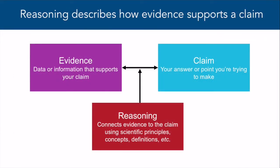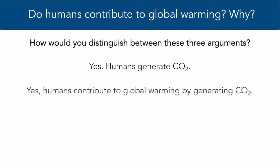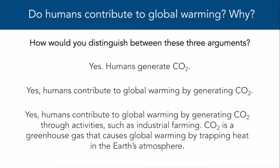When we reason within an argument, we're describing how evidence supports a claim using our knowledge of scientific concepts and principles. But there are many different ways to reason within an argument. For example, how would you distinguish between these three arguments to the question: Do humans contribute to global warming? Why? The first argument: yes, humans generate CO2. The second: yes, humans contribute to global warming by generating CO2. The third: yes, humans contribute to global warming by generating CO2 through activities such as industrial farming. CO2 is a greenhouse gas that causes global warming by trapping heat in the Earth's atmosphere. Though all three statements argue for essentially the same claim using the same evidence, how they're structured is different. This is where the modes of reasoning comes in, which will help us distinguish between arguments structurally.